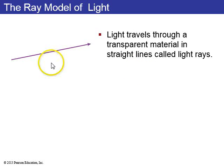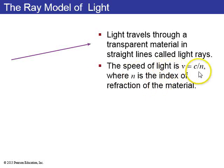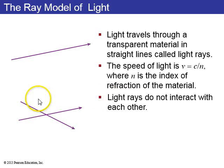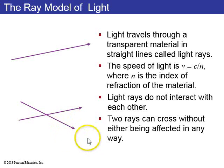Light rays travel through transparent material in straight lines called rays. The speed of light is c over n, where c is the speed of light in a vacuum and n is called the index of refraction of the material — a dimensionless number greater than one. Light rays do not interact with one another, so if two rays go through the same point, they just cross without affecting each other in any way.